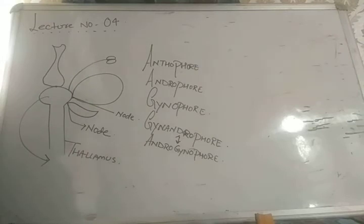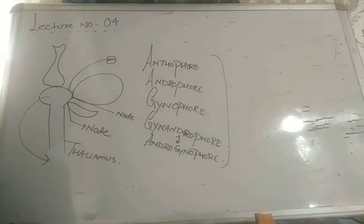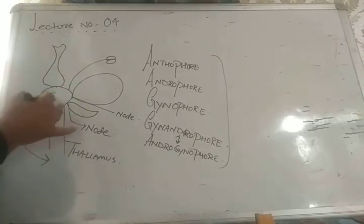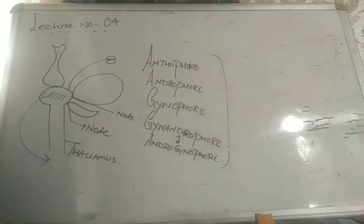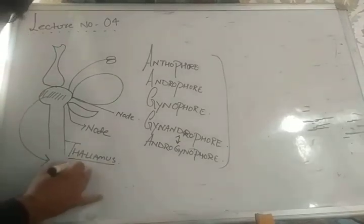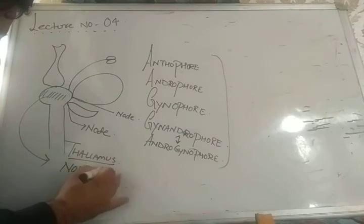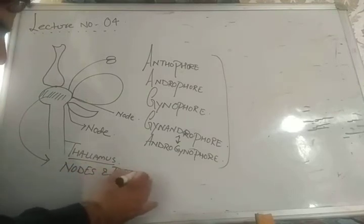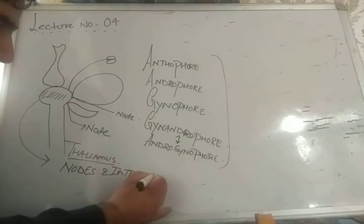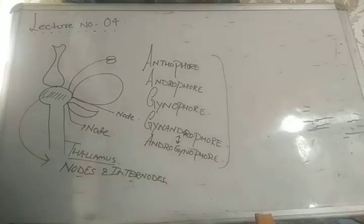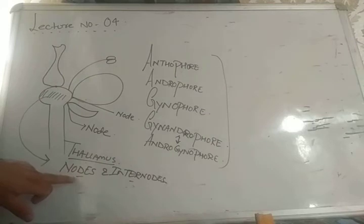Before understanding these four terms, let me give you a brief description of the flower. We have already studied the structure of the flower. The structure on which all the floral whorls are present is called the thalamus. On the thalamus there is actually a congestion of nodes and internodes. The point from which a leaf arises is called a node, and the distance between two nodes is called an internode.